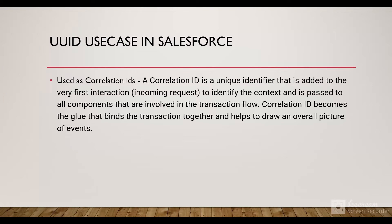Let's see what is the use case of this in Salesforce. During integrations of multiple systems, let's say we have a middleware in between two systems. We send a header that is the X-Correlation-ID. A correlation ID is a unique identifier added to the very first interaction to identify the context, and is passed to all components involved in the transaction flow. Let's say we are integrating two systems with Mulesoft as the middleware. The request would travel from Salesforce to middleware and from middleware to the third-party system.